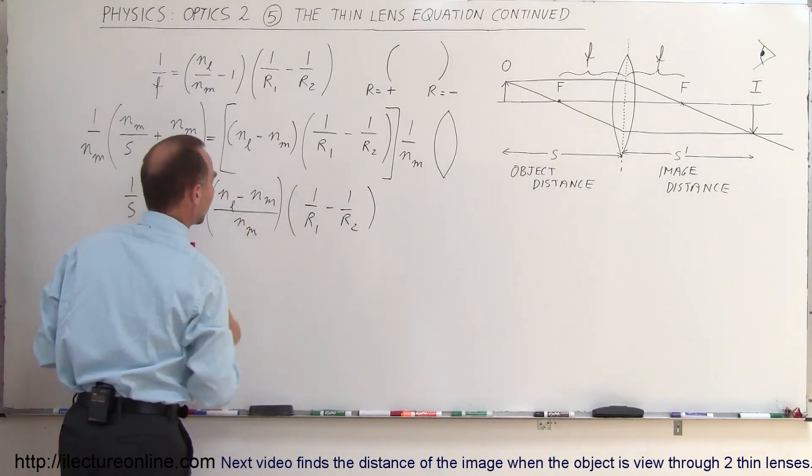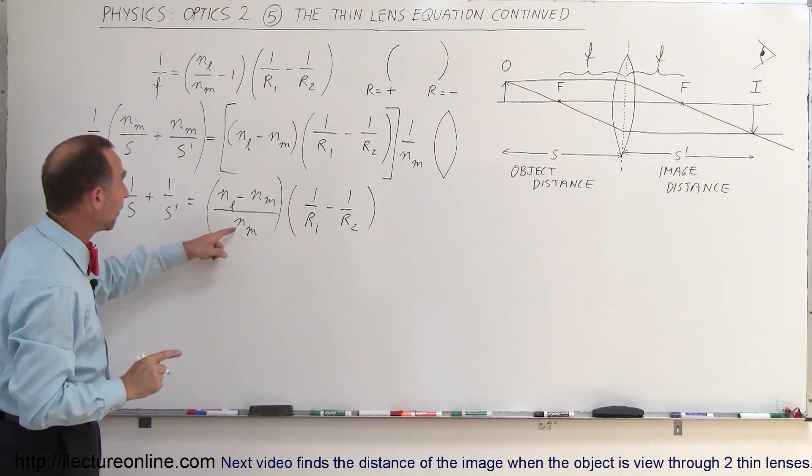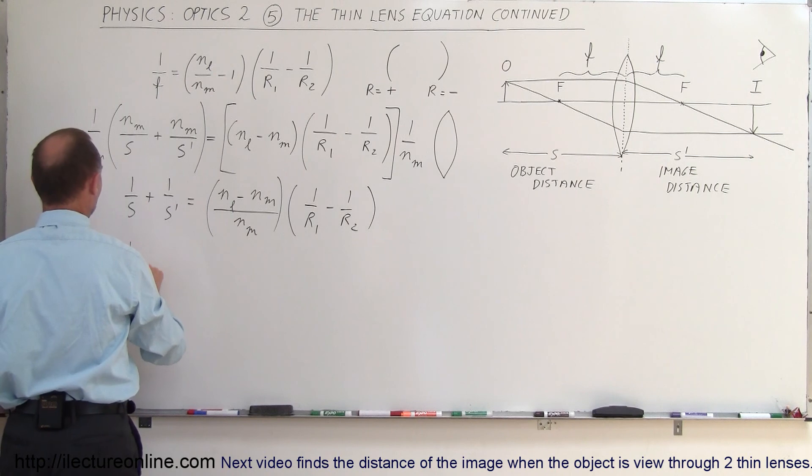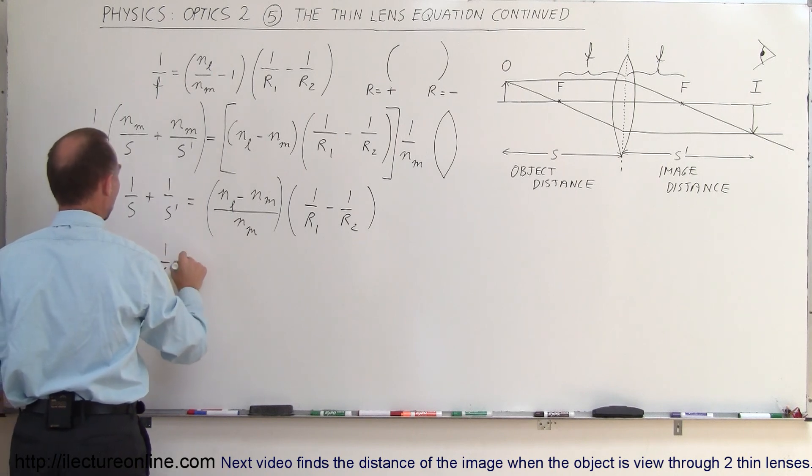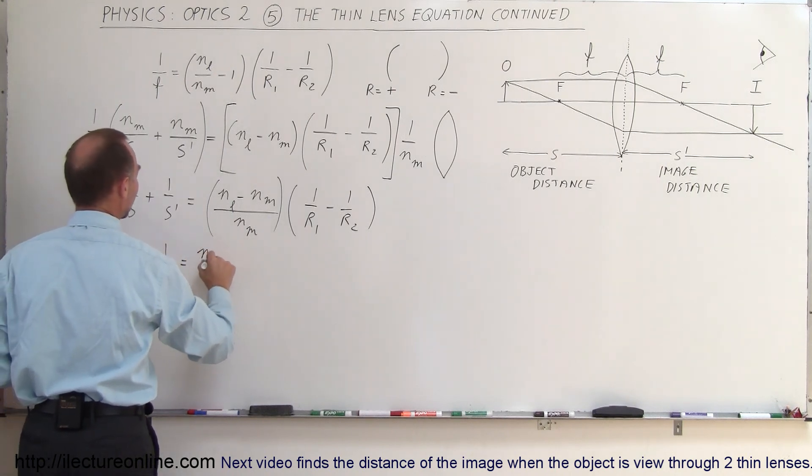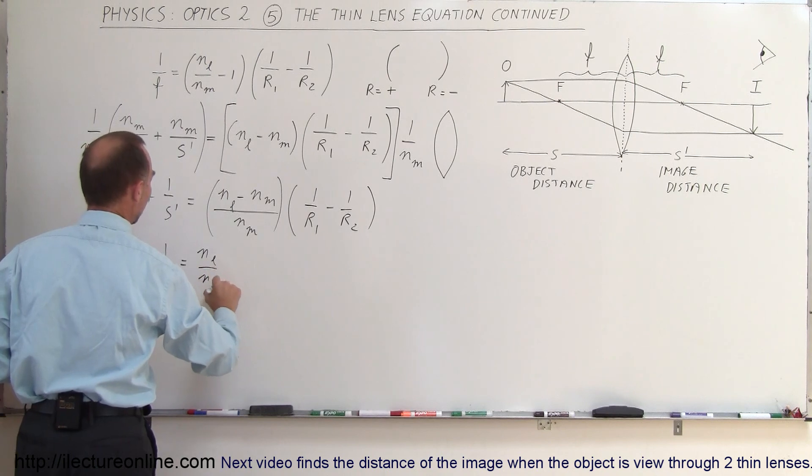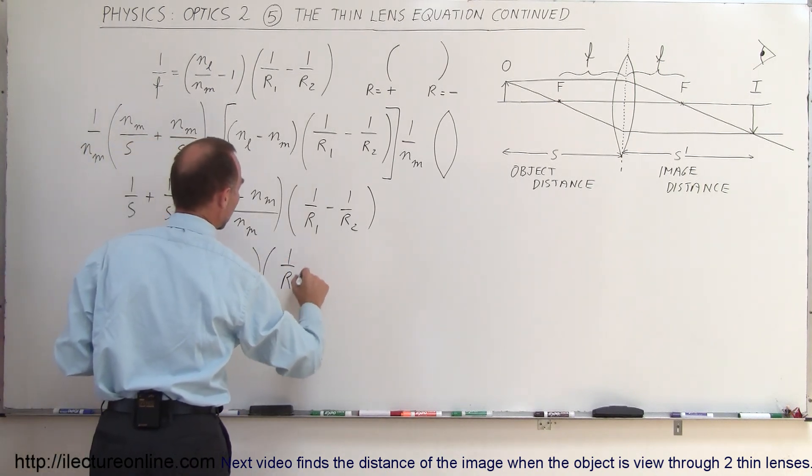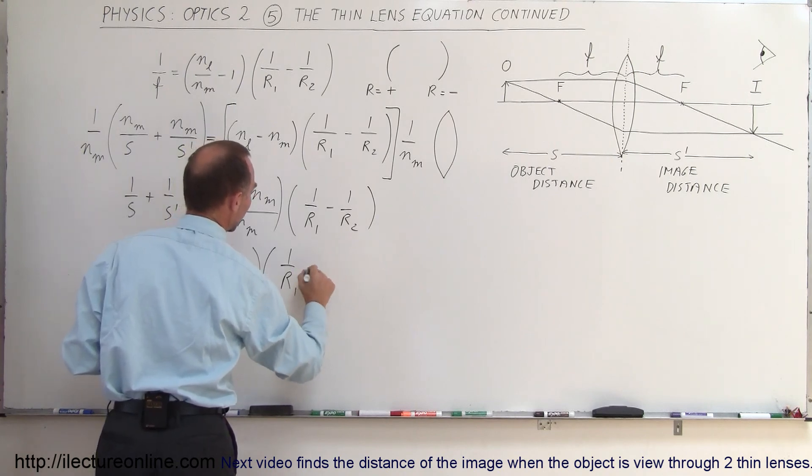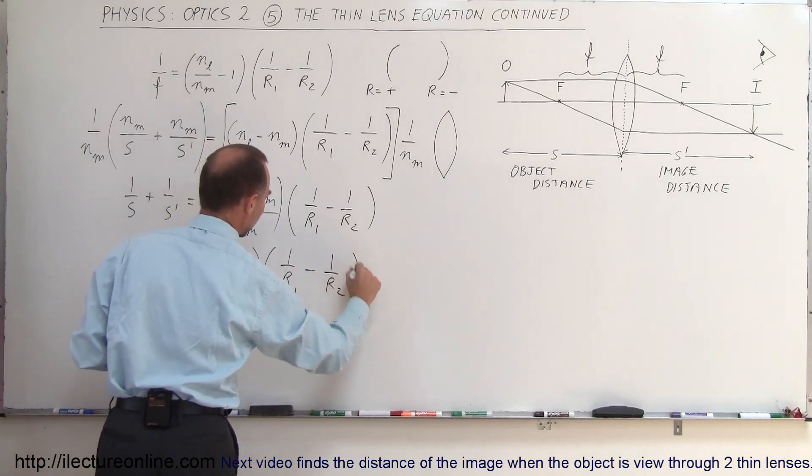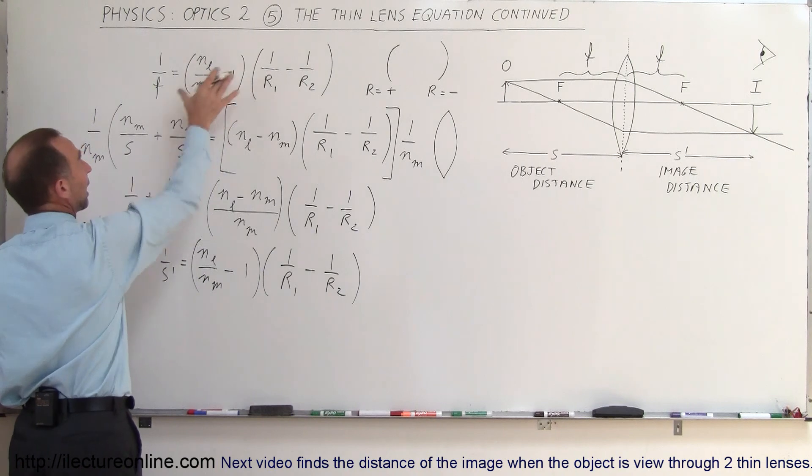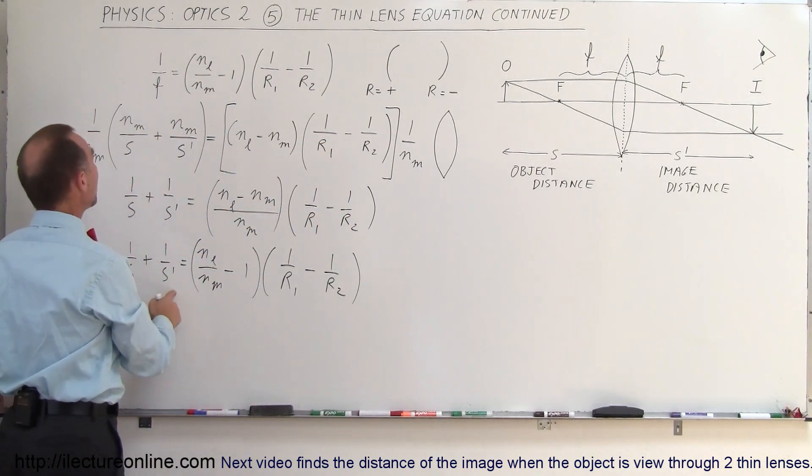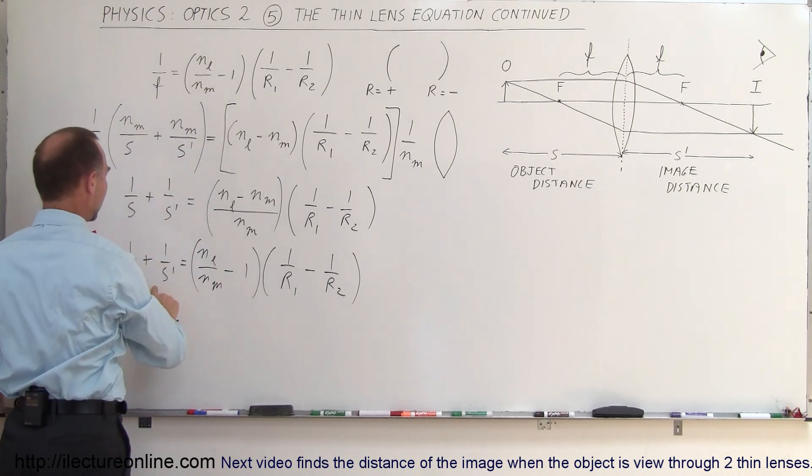If I put that in parentheses, it looks better. Now let's divide N_M into the numerator, so we get 1 over S plus 1 over S prime equals (N_L divided by N_M minus 1) times (1 over R1 minus 1 over R2). Now you can see the similarity to what we have up there. This looks exactly like what we have over here, which means this must equal this.